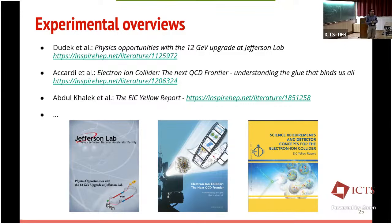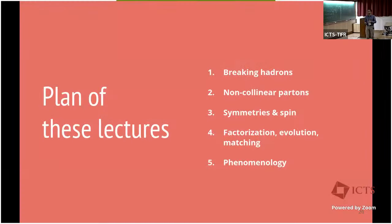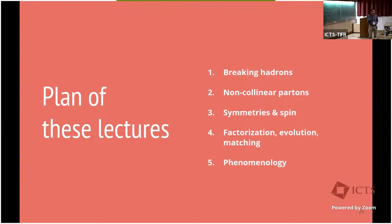The plan for these lectures: today was a brief introduction and then we'll see what happens when we try to break hadrons — most of this has been covered in previous lectures, but repetition is useful in a school. Tomorrow we'll discuss partons in general and introduce collinear and TMD parton distribution functions, focusing on symmetry properties including deriving the sign change for the Sivers function. Then we'll discuss spin asymmetries. Thursday we'll cover factorization, evolution, and matching of TMDs, and finally some phenomenology.